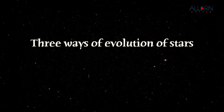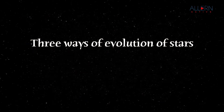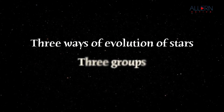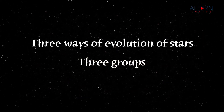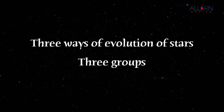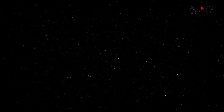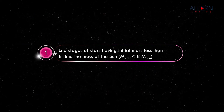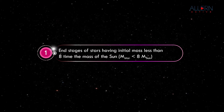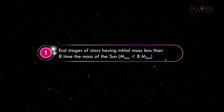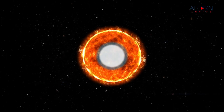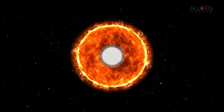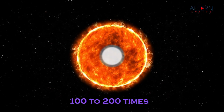There are three ways of evolution of stars depending on their initial mass, and thus we can divide stars into three groups. The path of evolution and end stage of all stars in the same group is the same. Stars in the first group undergo huge expansion and their radius increases by a factor of 100 to 200.